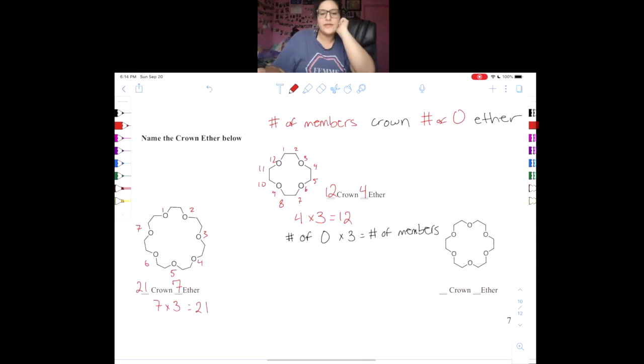If you go through and count, you will see that this is in fact correct. For the last one, we have one, two, three, four, five, six oxygens. Six times three equals eighteen.